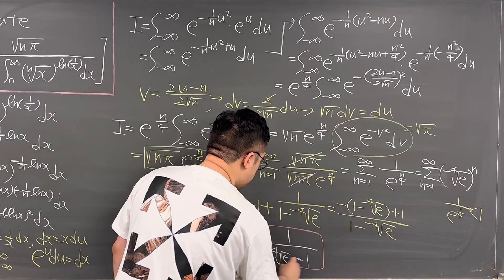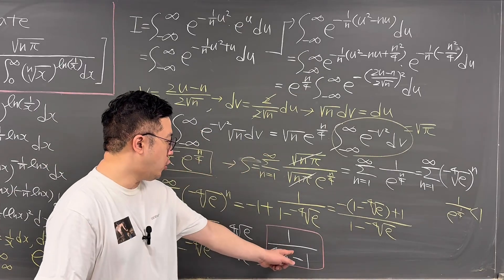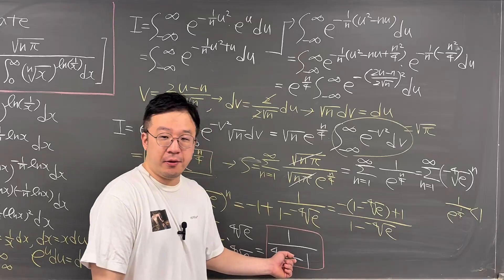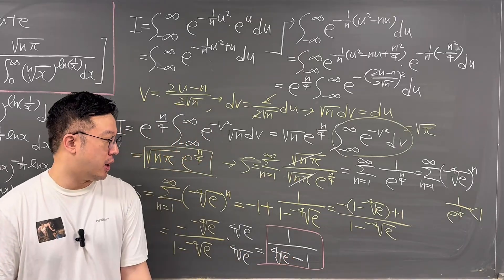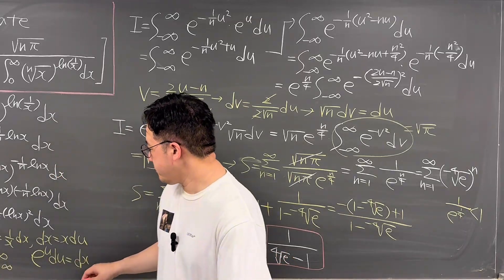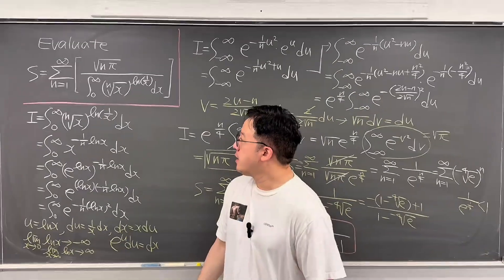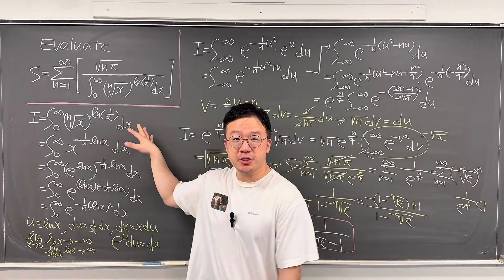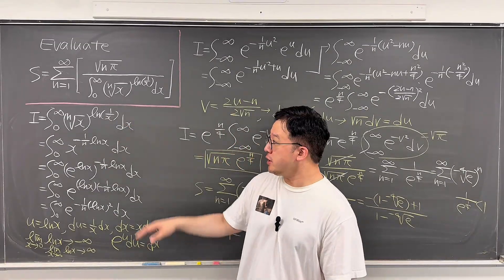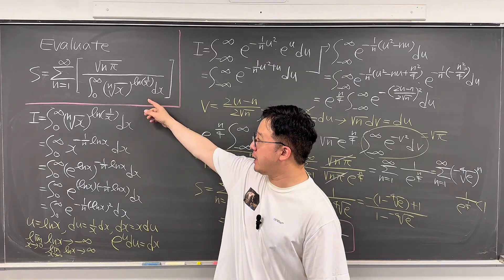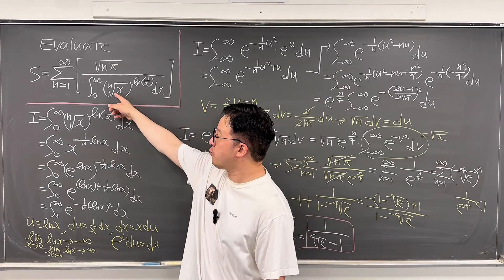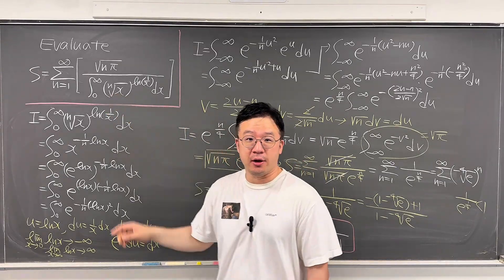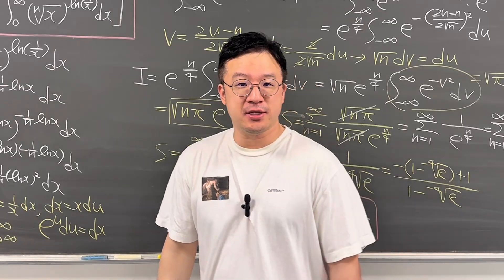So the answer for this question is 1 over the fourth root of e minus 1. Pretty interesting calculus question using the Gaussian integral for the integral on the denominator. How amazing!